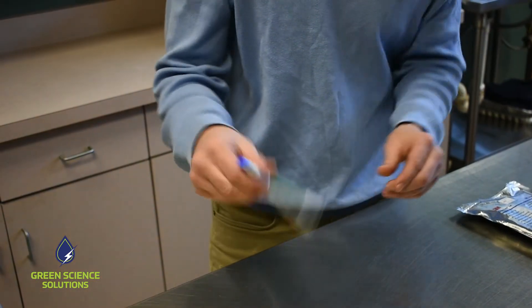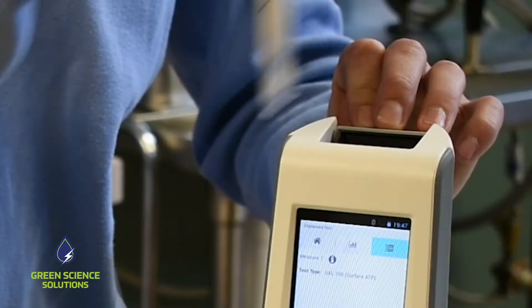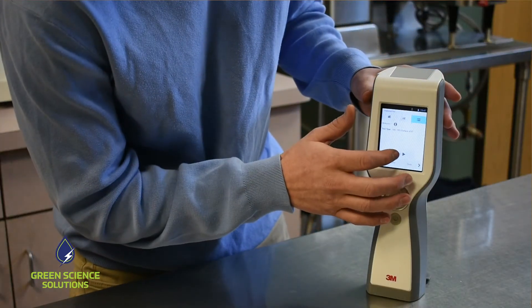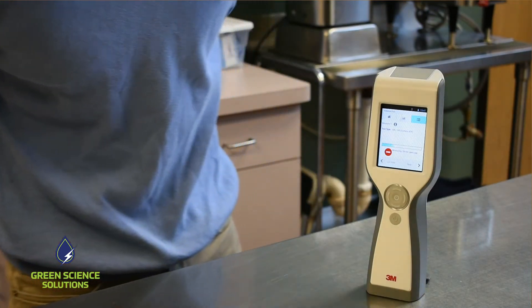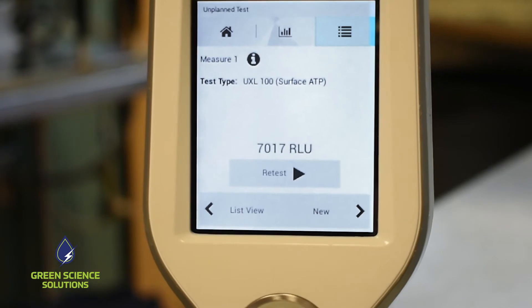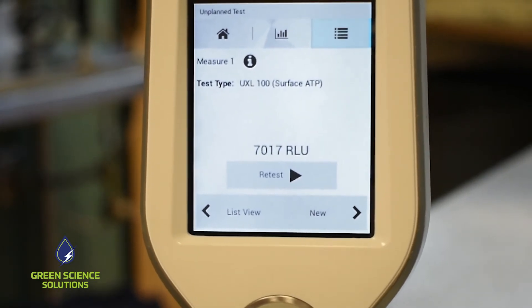Snap the swab into the solution, shake it up, then put the swab into the LM1, and in just seconds it gives you a reading as to how clean or dirty the area is. See that number? That score tells you how much dirt or ATP is on the surface.